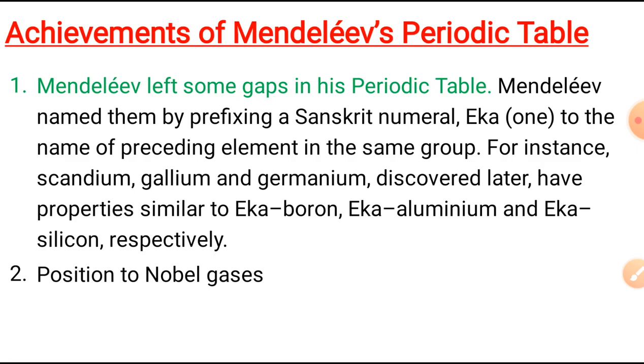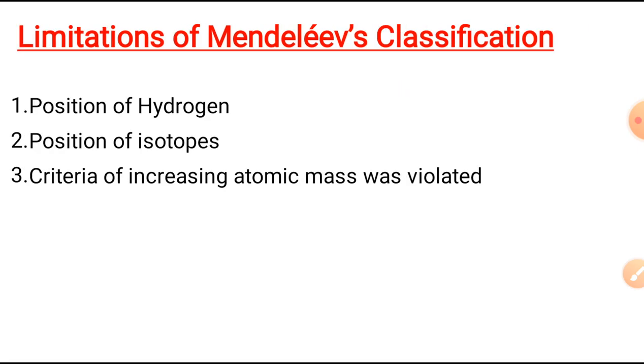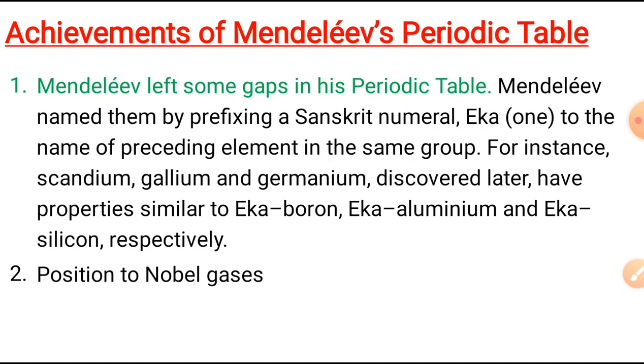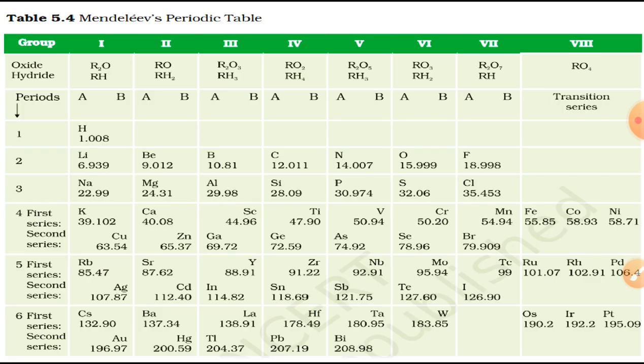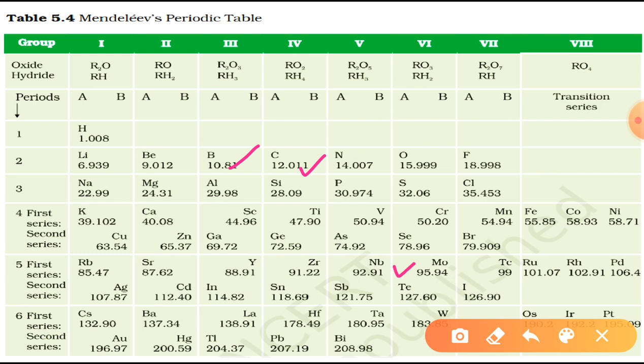A fourth limitation was the placing of heavier elements before lighter ones. Many times, as with aluminium and silicon, elements having a higher atomic mass were placed before elements having a lower atomic mass. Examples include: argon was placed before potassium, cobalt was placed before nickel, and tellurium was placed before iodine. You can find tellurium and iodine in the table to confirm this.